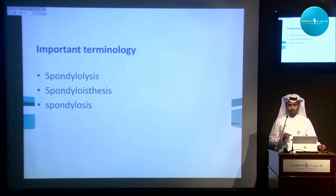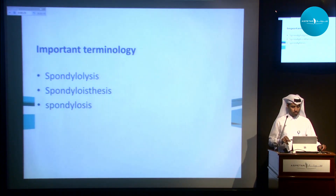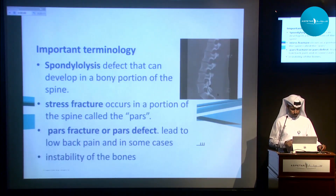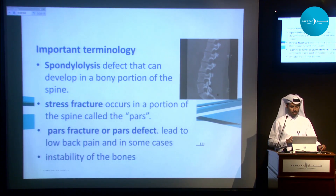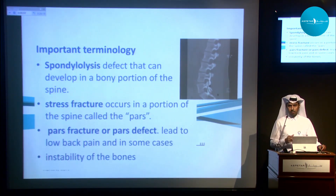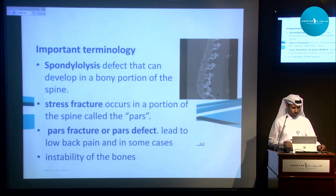Spondylosis means degeneration of the spine — we shouldn't see a lot of it since we are a sports hospital, but we still do. Spondylolysis is a defect in the bone; it can affect any part of the spine but usually occurs in the pars because that is the area where the most stress happens.